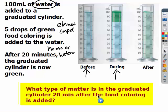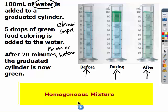And then finally, after 20 minutes, our graduated cylinder looks like this. So what type of matter is present now? If you said homogeneous, you are correct. It's uniform throughout now. There's no longer any distinct layers.